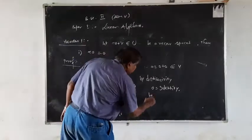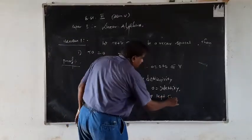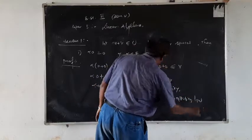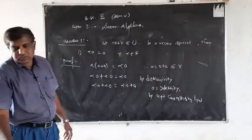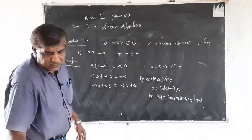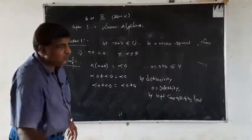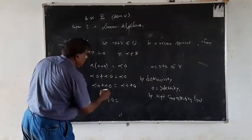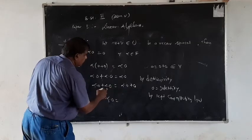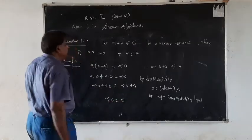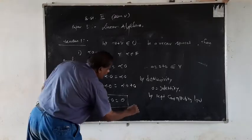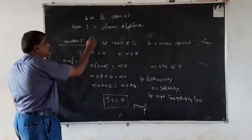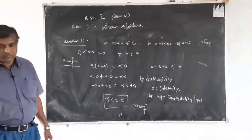By the left cancellation law, α·0 on both sides cancels, and the remaining term gives α·0 = 0. So we arrive at the result and have proved part one.